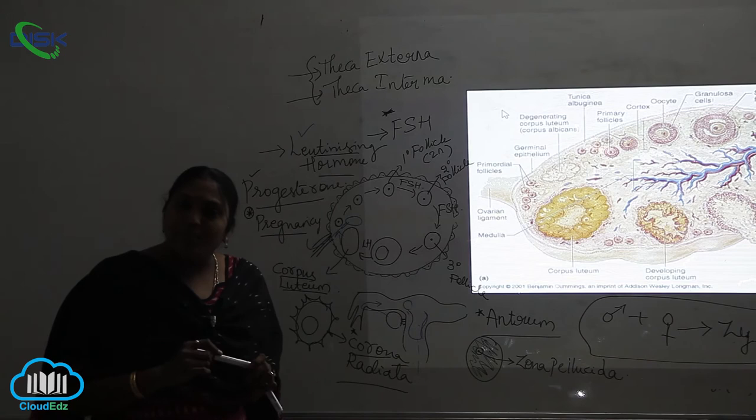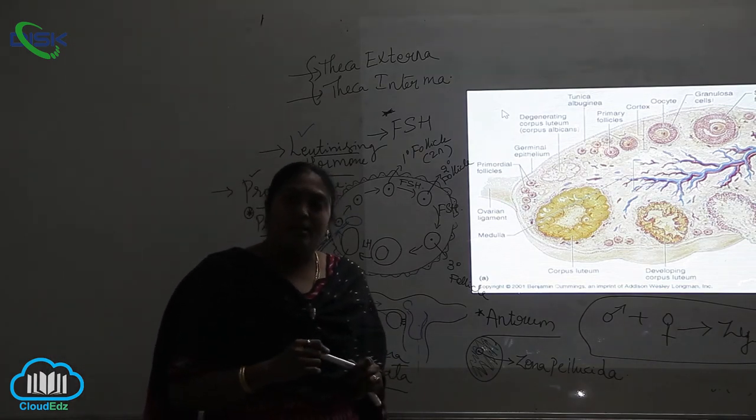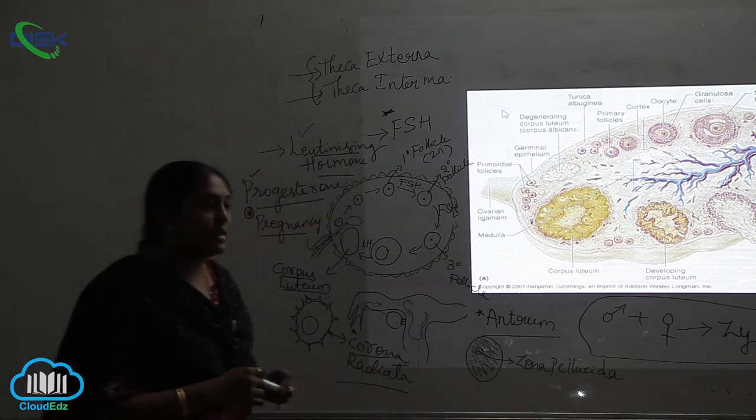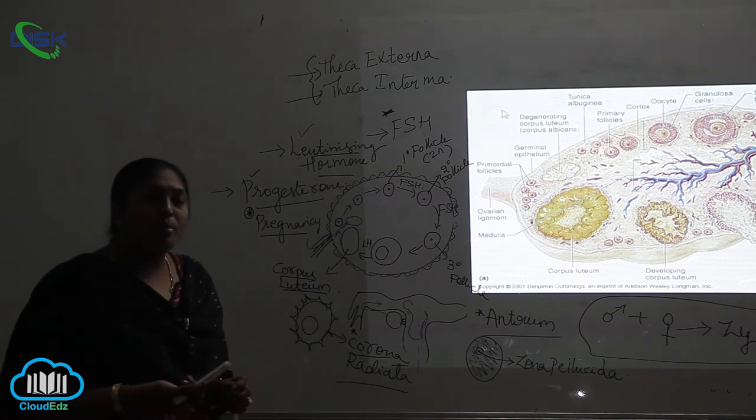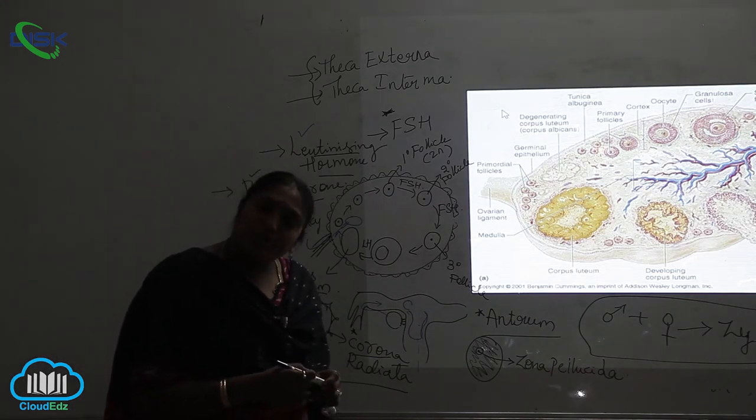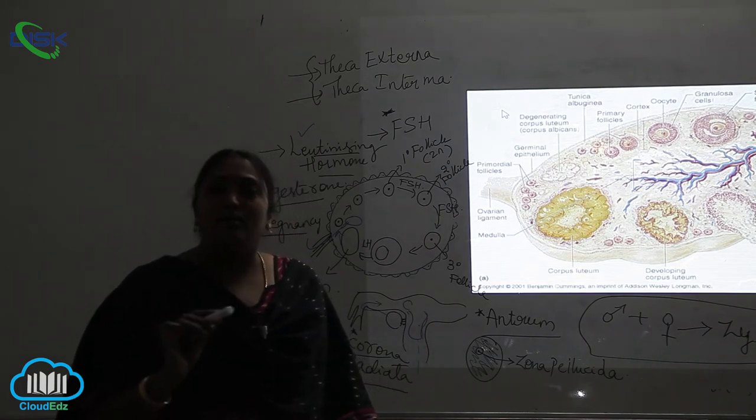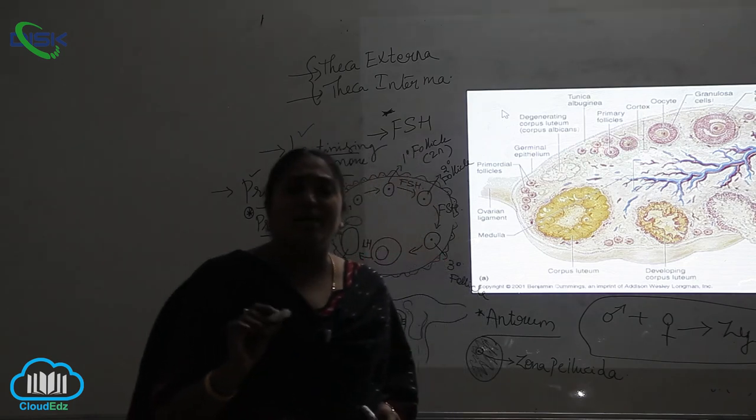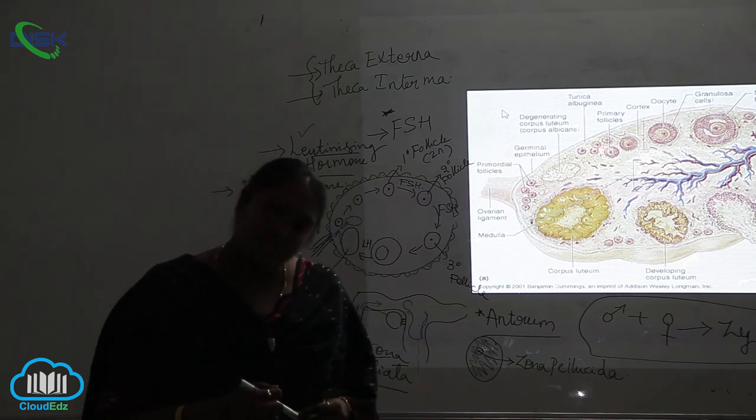What you have to remember is from the anterior part of the pituitary gland, the important hormones like follicle stimulating hormone, the luteinizing hormone, and finally progesterone if fertilization occurs. These are the three hormones playing a very important role in the female reproductive system.